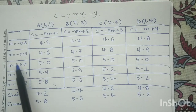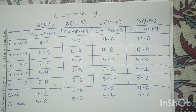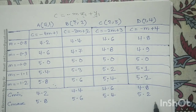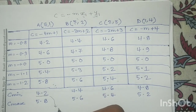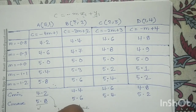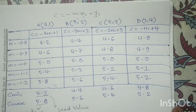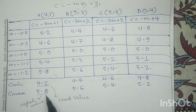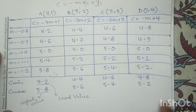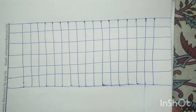After doing this tabular calculation and determining C min and C max for all columns, we find the overall minimum value of C is 4.2 (the least value) and the overall maximum value of C is 5.8 (the highest value). Next, we have to perform the voting. For voting, we prepare a voting table.